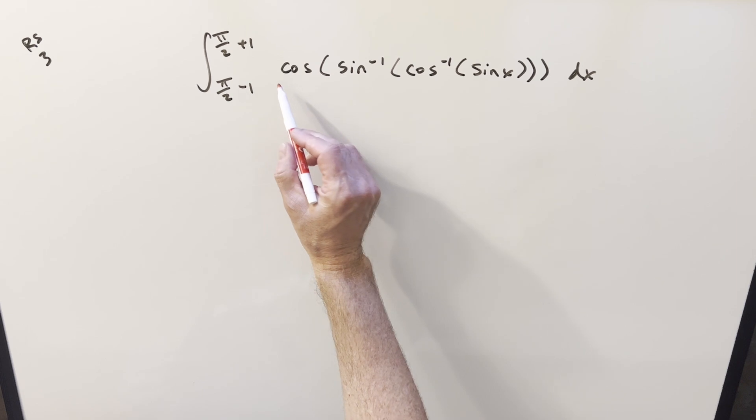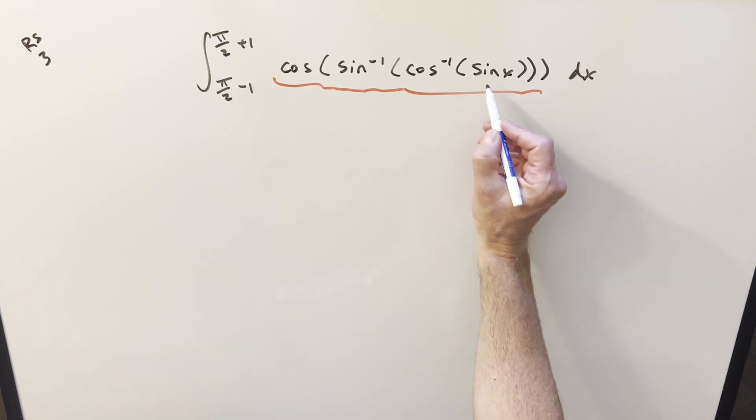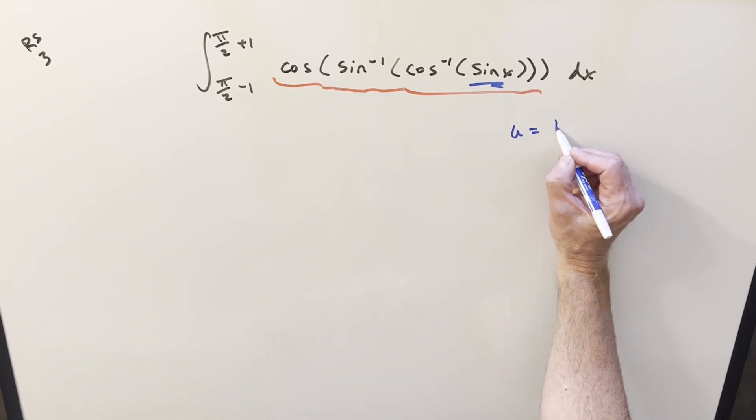At first I really didn't want to deal with all of this stuff here because it just seems like a pain to untangle. But what I found was actually with one substitution, we can clean this up quite a bit. Just noticing because we have sine here, what I want to do is a substitution that's going to make use of the complementary angle formula.